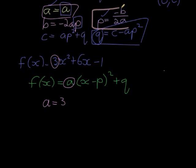Then I have this equation that p is equal to negative b over 2a. p is equal to negative 6 over 2 times a, which is 3. So I get negative 6 over 6 gives me negative 1.